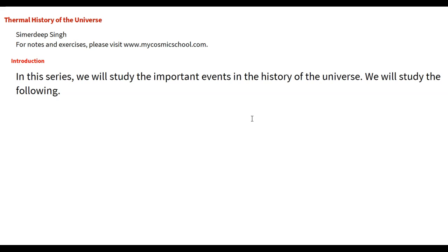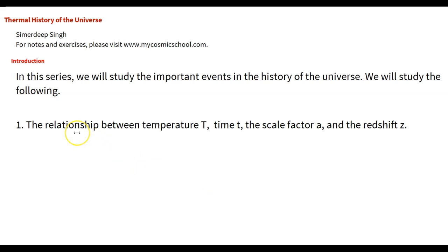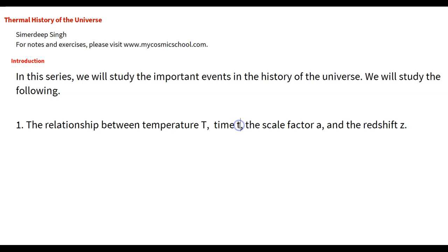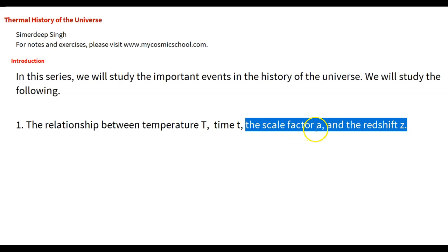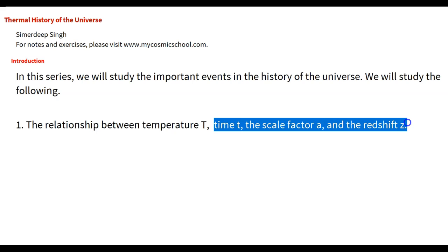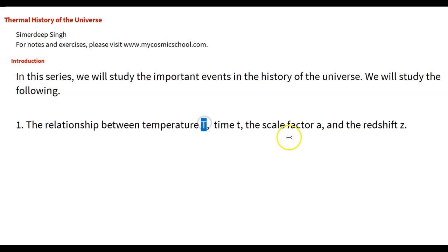In this series, we will study the important events in the history of the universe, especially the early universe. One of the most important things we are interested in is the relationship between temperature and time. In the standard model of cosmology, time can be expressed in terms of the scale factor and in terms of the redshift. All three — time, scale factor, and redshift — are time variables, and we are interested in knowing the relationship between temperature and one of these time variables.